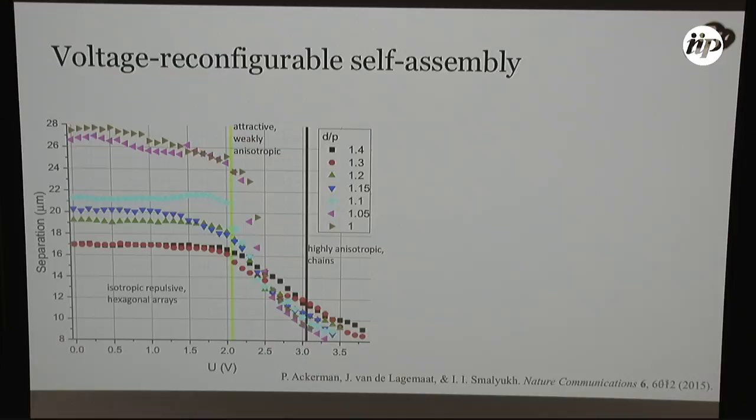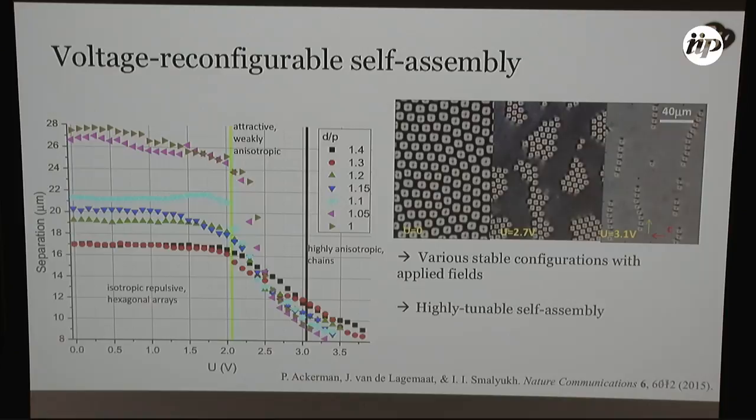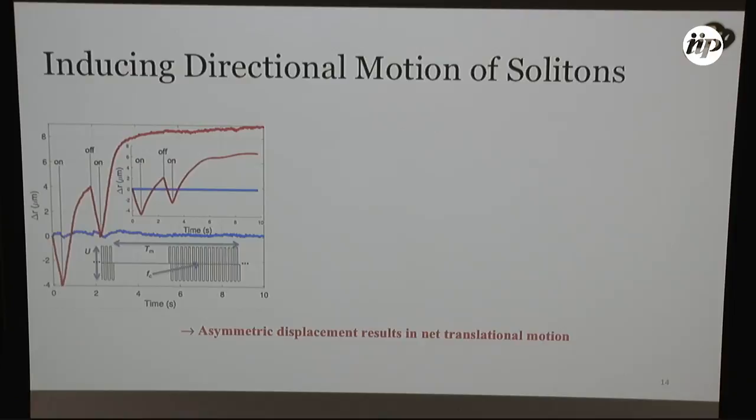And so, here, with varying the applied voltage, we can control the strength of these interactions and, therefore, control the self-assembly of numerous solitons together into arrays or hexagonal close-packed clusters or chains, like I mentioned before. And this self-assembly is highly tunable because of the fact that our solitons are rather squishy and reconfigurable in nature.